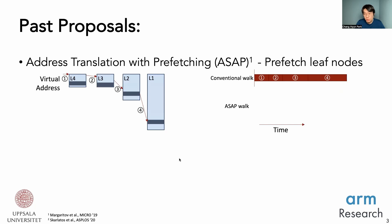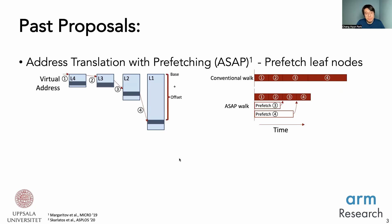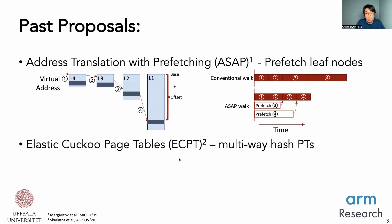There were past proposals that tackled a similar problem. The first is Address Translation with Prefetching, or ASAP, which proposes prefetching the leaf nodes of the page table while the page table walker is accessing the root nodes, helping reduce the latency of accessing the leaf nodes. This requires prefetching, and generating these prefetching addresses requires base-plus-offset type calculations, which requires contiguous regions for L2 and L1 page tables. The second work is Elastic Cuckoo Page Tables, or ECPT, which proposes multi-way hash page tables.